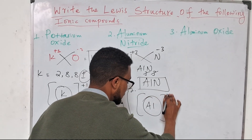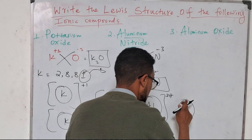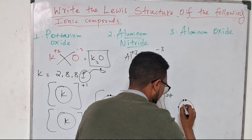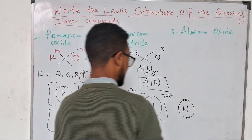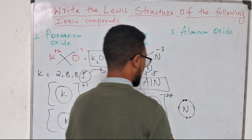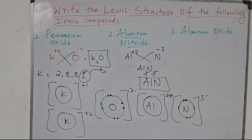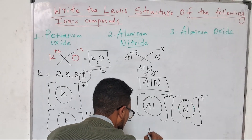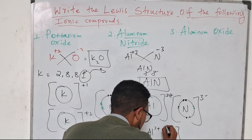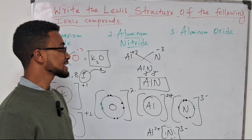Aluminum carries a +3 charge, and nitrogen has gained three electrons. Originally nitrogen had five electrons in its outer shell, but after gaining three electrons from aluminum, it now has eight. Nitrogen carries a -3 charge. This is the Lewis structure for aluminum nitride, written as Al³⁺ and N³⁻.